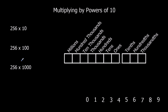So here we've got the question 256 multiplied by 10. We've got 2 in the hundreds column, 5 in the tens column, and 6 in the ones column. When we multiply by 10, all of the digits move up a column — so the hundreds move into the thousands, the tens move into the hundreds, and the ones move into the tens.